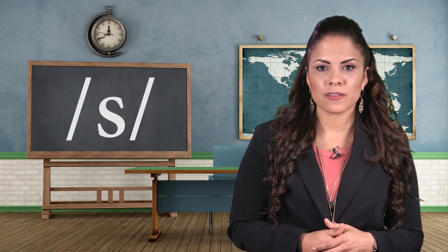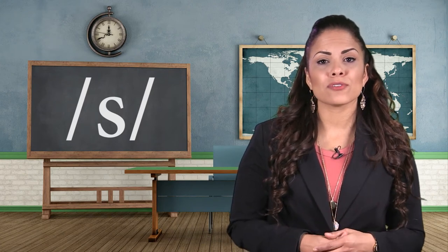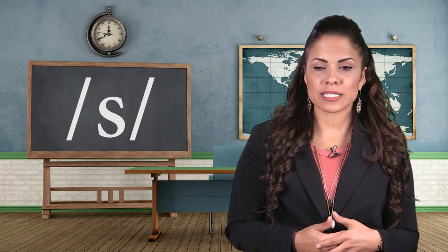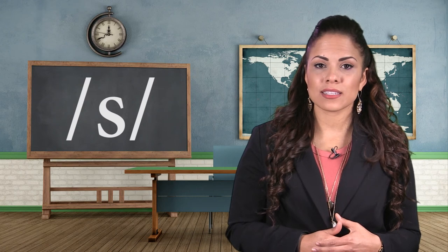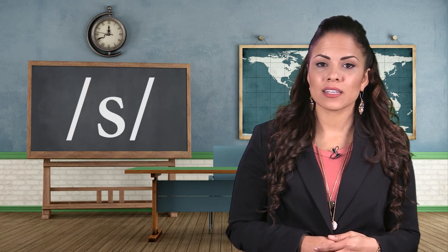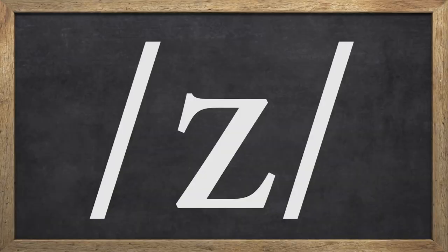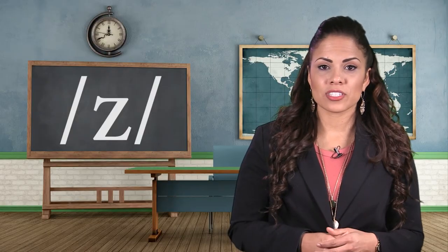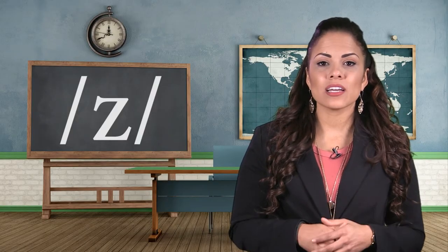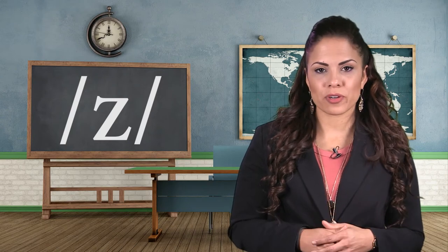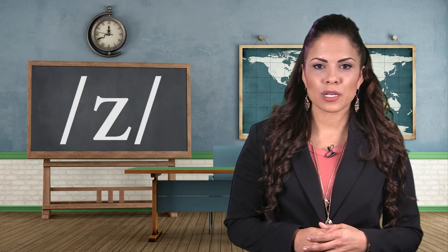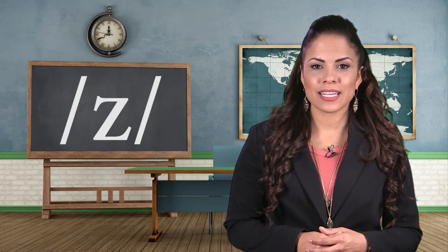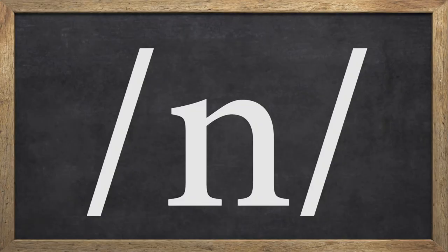The next alveolar sound is /s/. To produce /s/, place your tongue near the gum ridge but not touching it. You will blow air continuously and your vocal folds will not vibrate. For example: snake, save, estate, Eskimo, flies, and cars. The next alveolar sound is /z/. Your tongue is going to be near the ridge but not touching. There will be a continuous airflow and your vocal folds will vibrate.